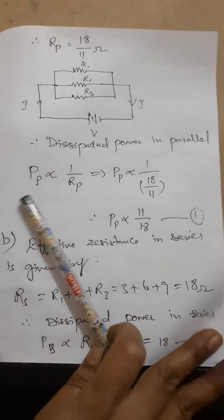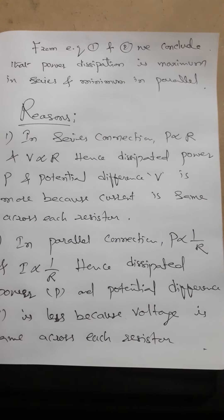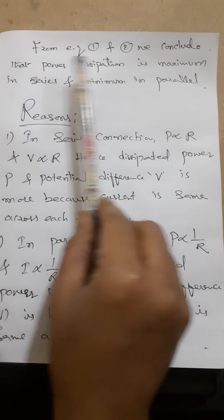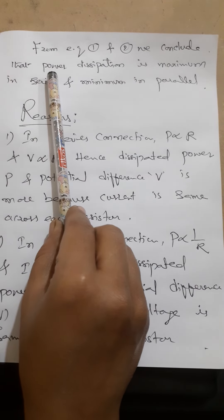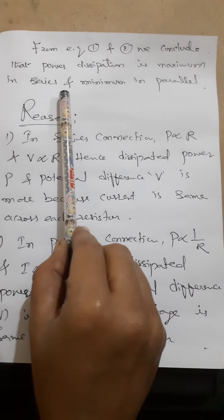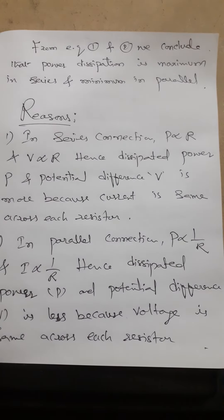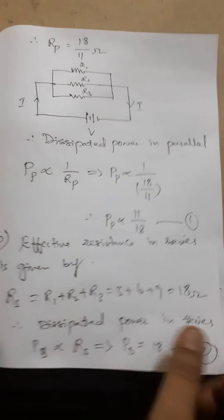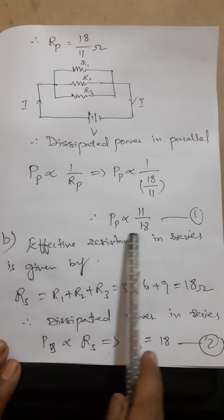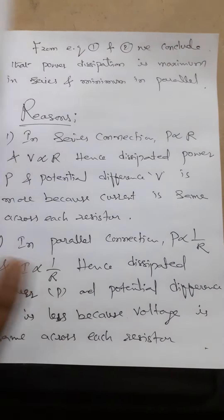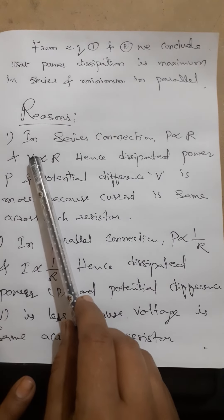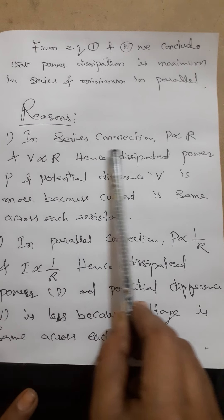Ps = 18 — let this be equation number two. From equations one and two, we conclude that power dissipation is maximum in series (Ps = 18) and minimum in parallel (Pp = 11/18).